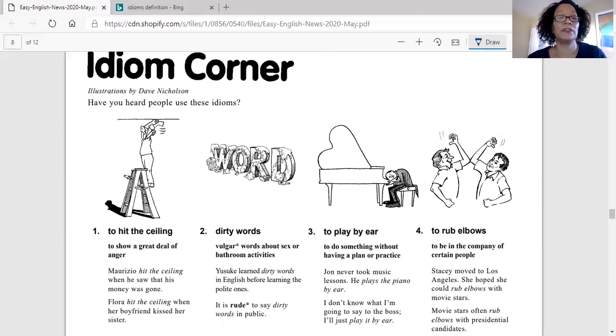Number one, it says to hit the ceiling. Here we have a man, he's on a ladder. He climbed to the top rung and he's hitting the ceiling. Well, what does that mean? Does it really mean hitting the ceiling? It means to show a great deal of anger. And then they give you two examples.